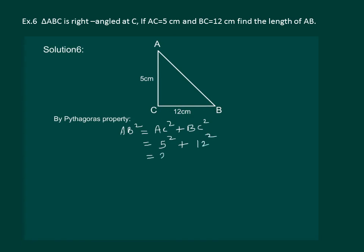On solving further, we get AB square equal to 169.